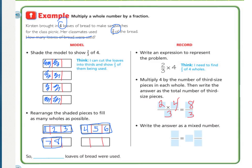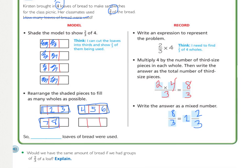So if we write that in the record area, 8/3. If we reduce that, how many 3's are in 8? Well, there's 2. That gives me 6. And then what's left over? 2. And what's our denominator? 3. And so our final answer, how many loaves were used? There were 2 and 2/3 loaves of bread used.